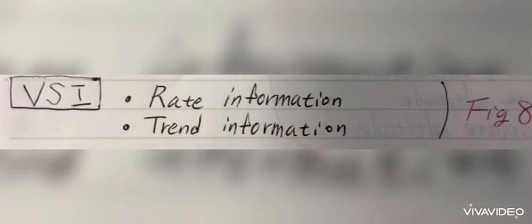The vertical speed indicator takes some time to indicate the exact vertical speed. However, the vertical speed indicator instantaneously indicates changes in vertical speed, in other words, trend information.